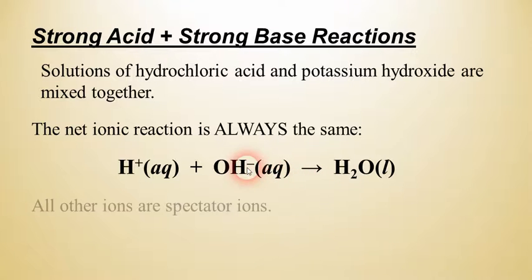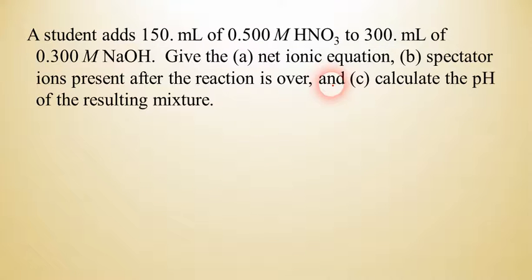So for example, for the equation we have up here, that's the net ionic equation. Everything else would be a spectator ion. So in our hydrochloric acid, that would be chloride Cl negative, and then the potassium K plus would be the spectator ion as well.